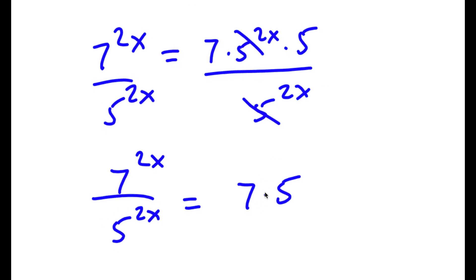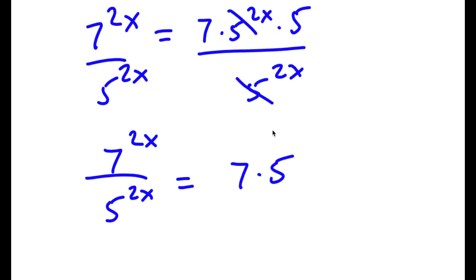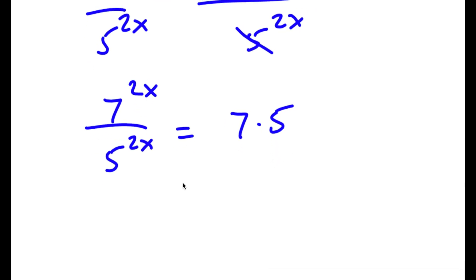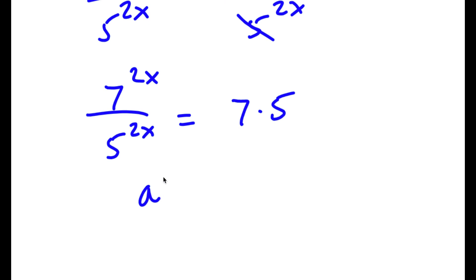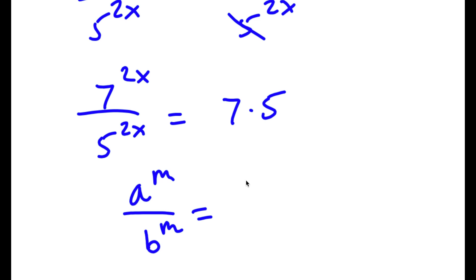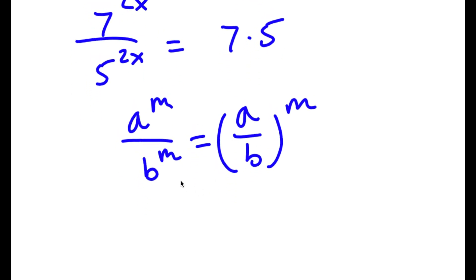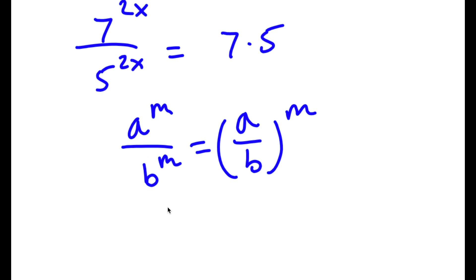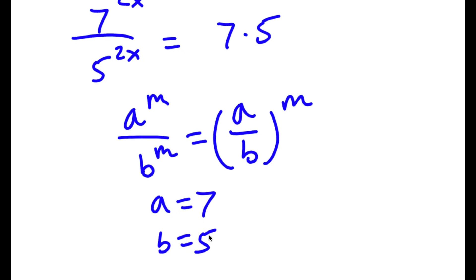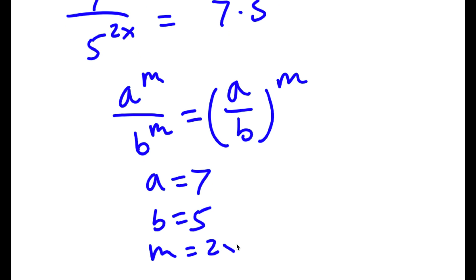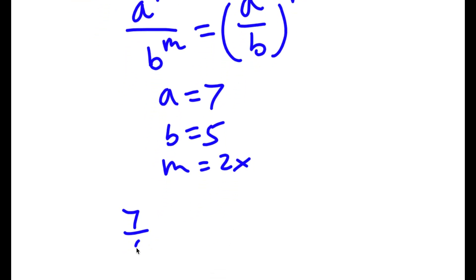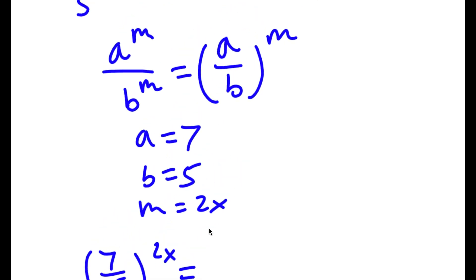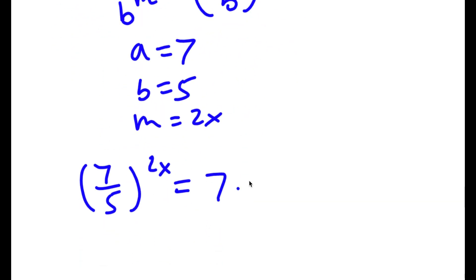Now, I'm not going to multiply 7 times 5 — I'll leave them as they are. If I have something in the form a to the power of m over b to the power of m, this equals a over b to the power of m. So with a as 7, b as 5, and m as 2x, I get 7 over 5 to the power of 2x equals 7 times 5.